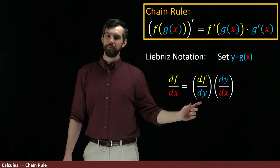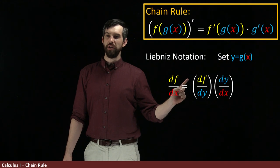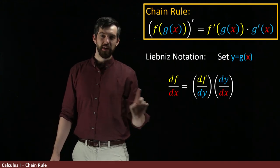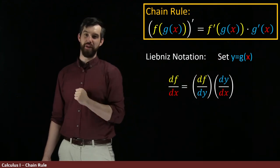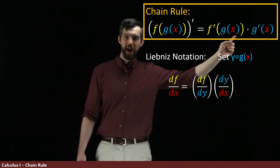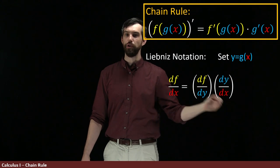The first of them is the derivative of the function not with respect to x, but with respect to y, with respect to this inside function. And then you multiply it by the g prime, which now turns into dy/dx.